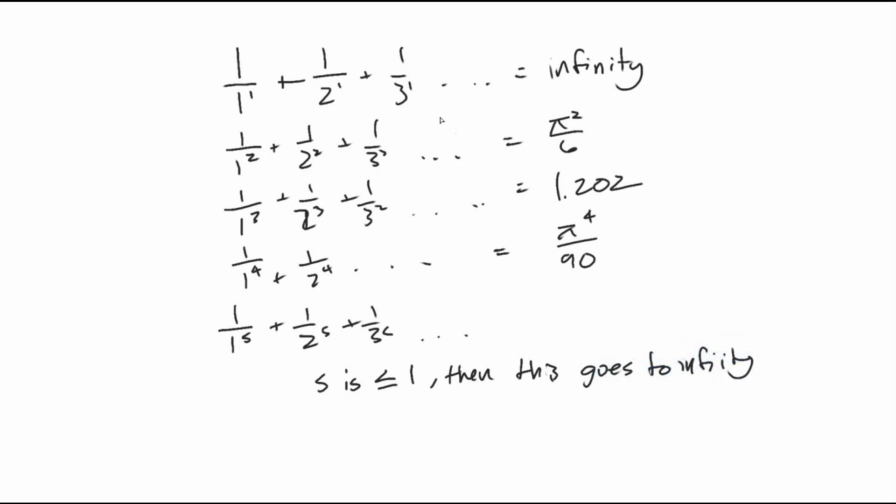Which is intuitive because this is infinity and anything less than that, these numbers will be bigger. 1 over 1 to the negative 2 is just 1 squared plus 2 squared plus 3 squared plus 4 squared. So if s is less than or equal to 1, then this goes to infinity. It's not very interesting. Scientists were sort of discouraged.